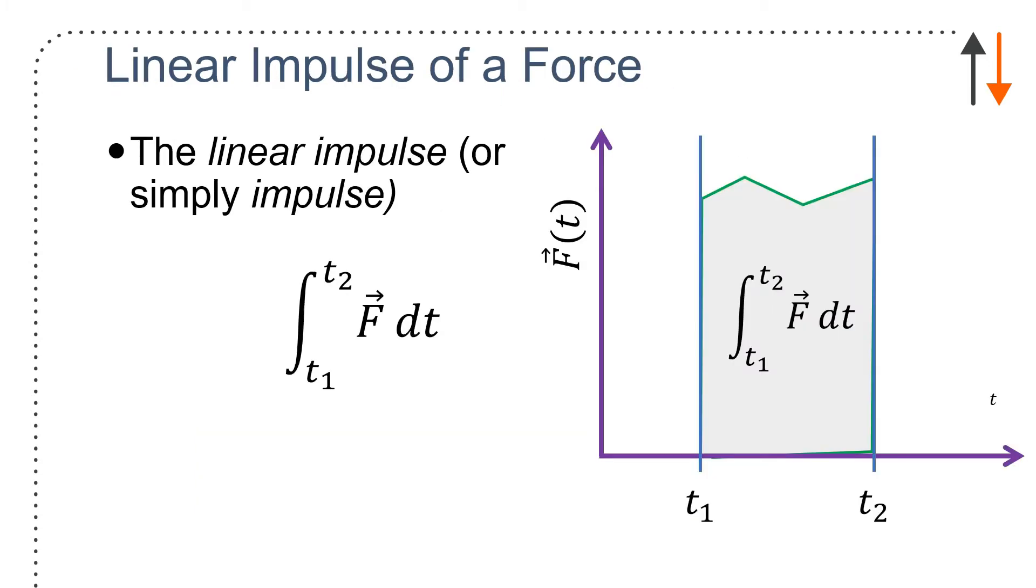So the linear impulse of a force is going to occur over time. So here's a graph from time one to time two of force. This green line is the time varying force. I'm too lazy to draw nice curved lines. And the shaded area is that integral. So by integrating under that curve, I get the linear impulse.